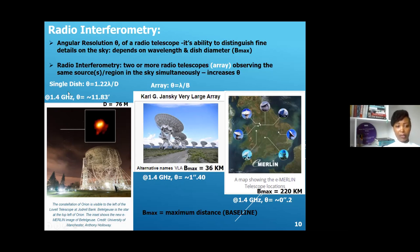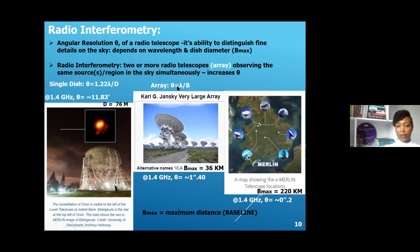For a single dish, this is the formula for the angular resolution, and for an array, the angular resolution is given by the wavelength divided by the baseline. Applying this radio interferometry technique, we see that the maximum baseline of an array is equivalent to the diameter of a single dish.